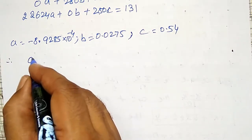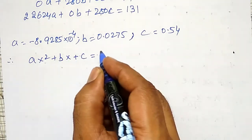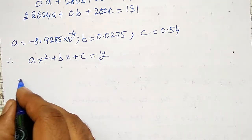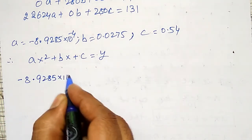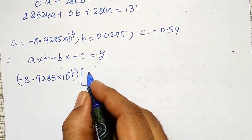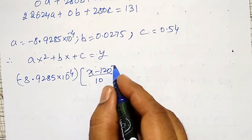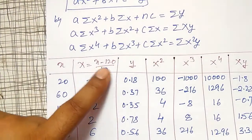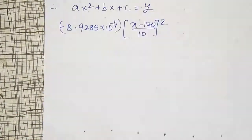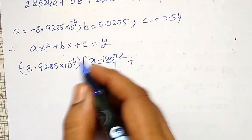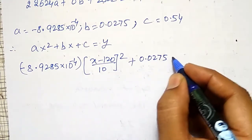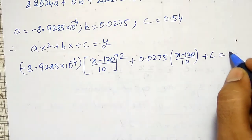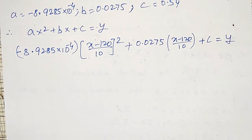Therefore, AX² + BX + C = Y for capital X. I will substitute A, B and back-substitute capital X = (x − 120) / 10 to get the solution in terms of small x. My A value is −8.9285 × 10⁻⁴ into ((x − 120) / 10)², plus B = 0.0275 into (x − 120) / 10, plus C = Y.